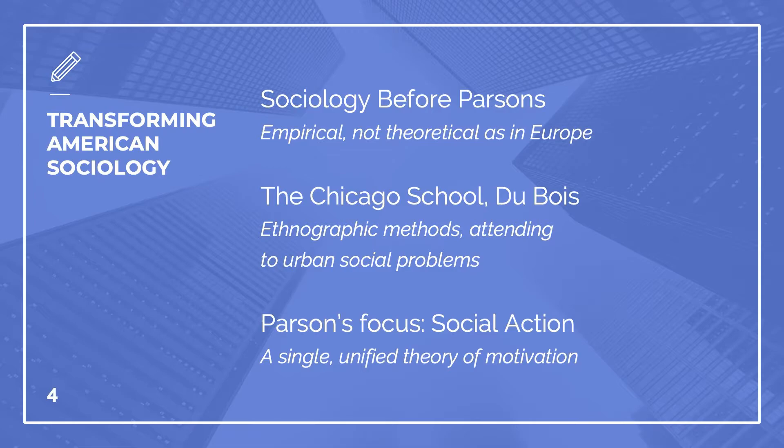The focus, for the most part, was on ethnography — that is, the methods of first-person observation. People had been generally resistant to the focus on power, capitalism, and so on, characterizing European sociology. Rather, there were isolated stories about small segments of society, rather than a general, universally applicable, and comparable story about social order.